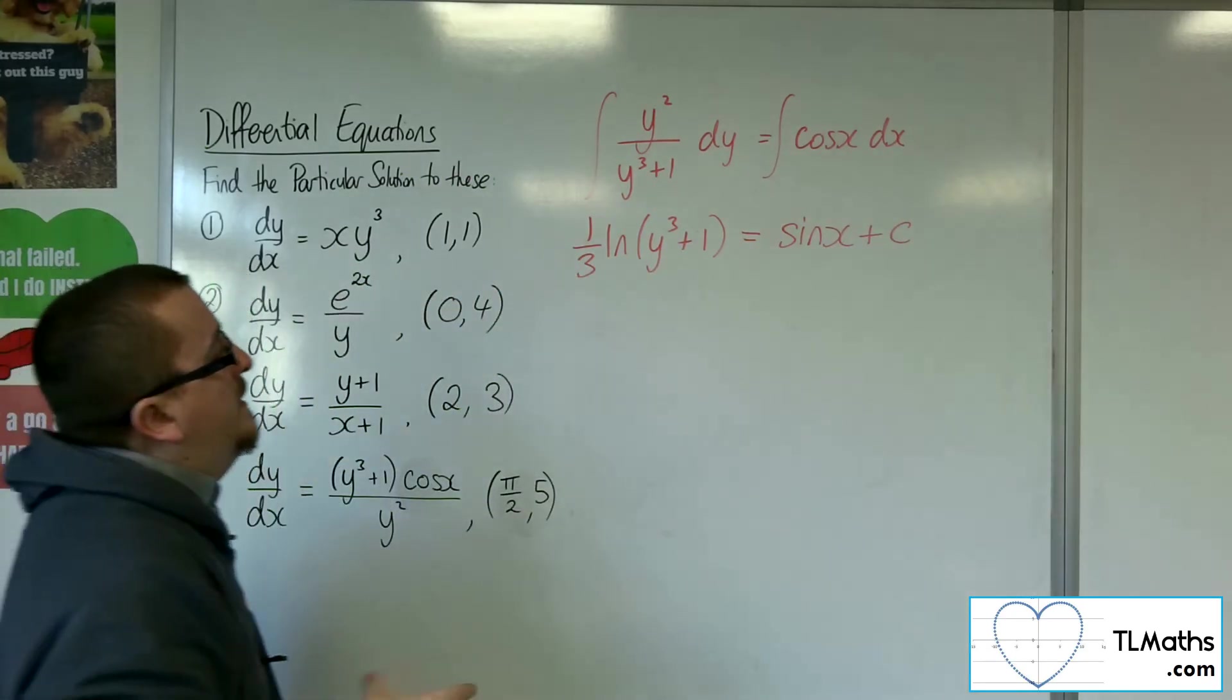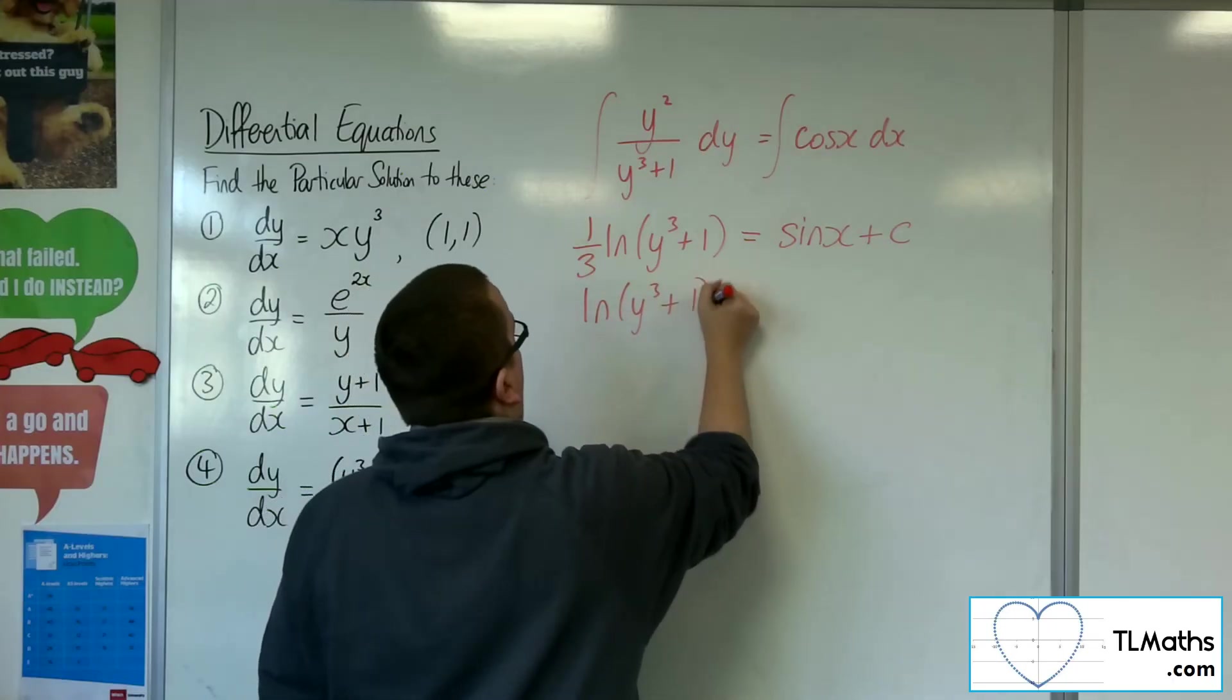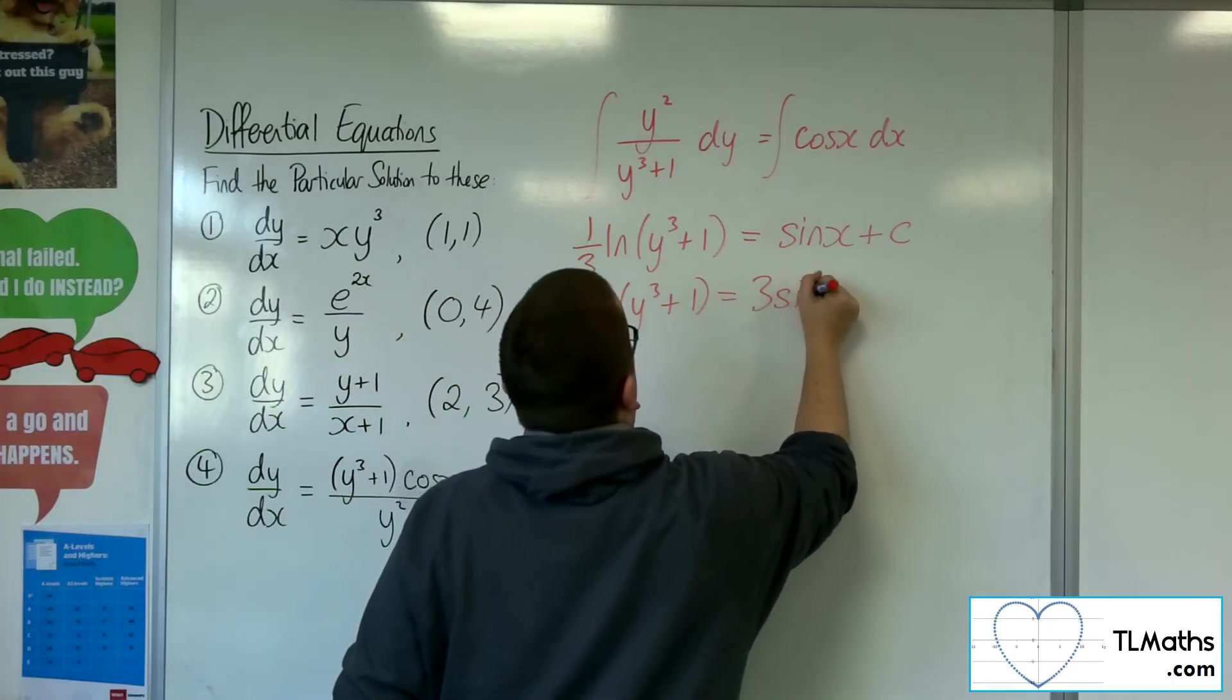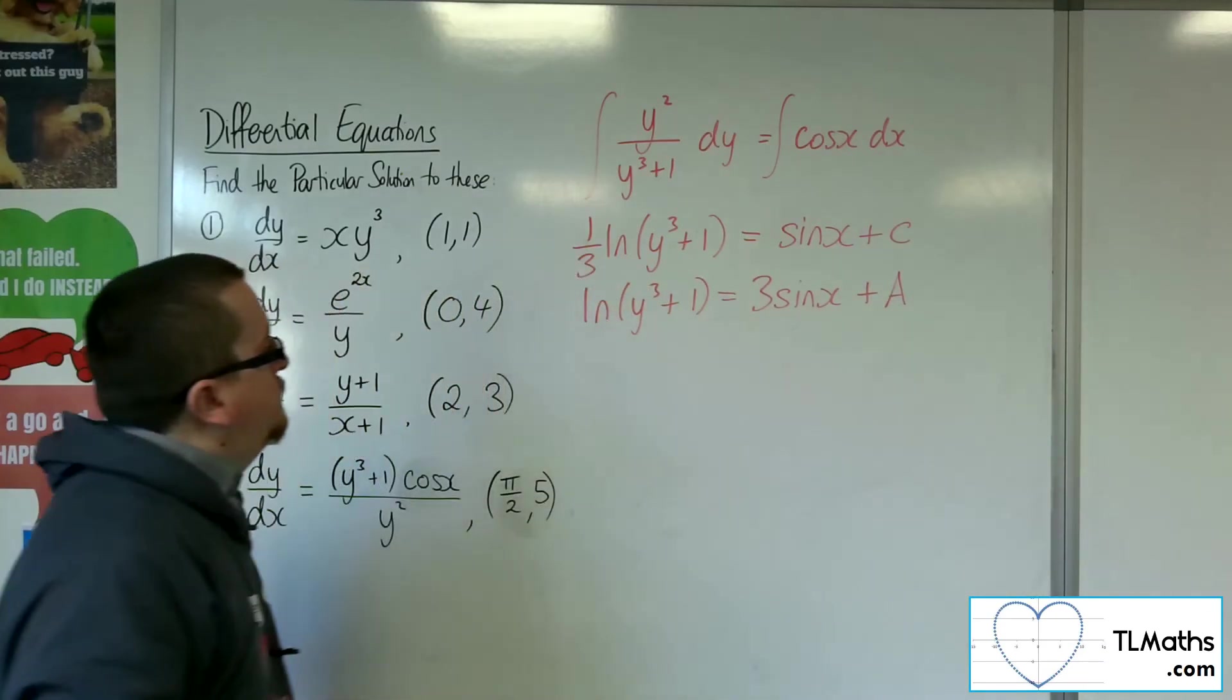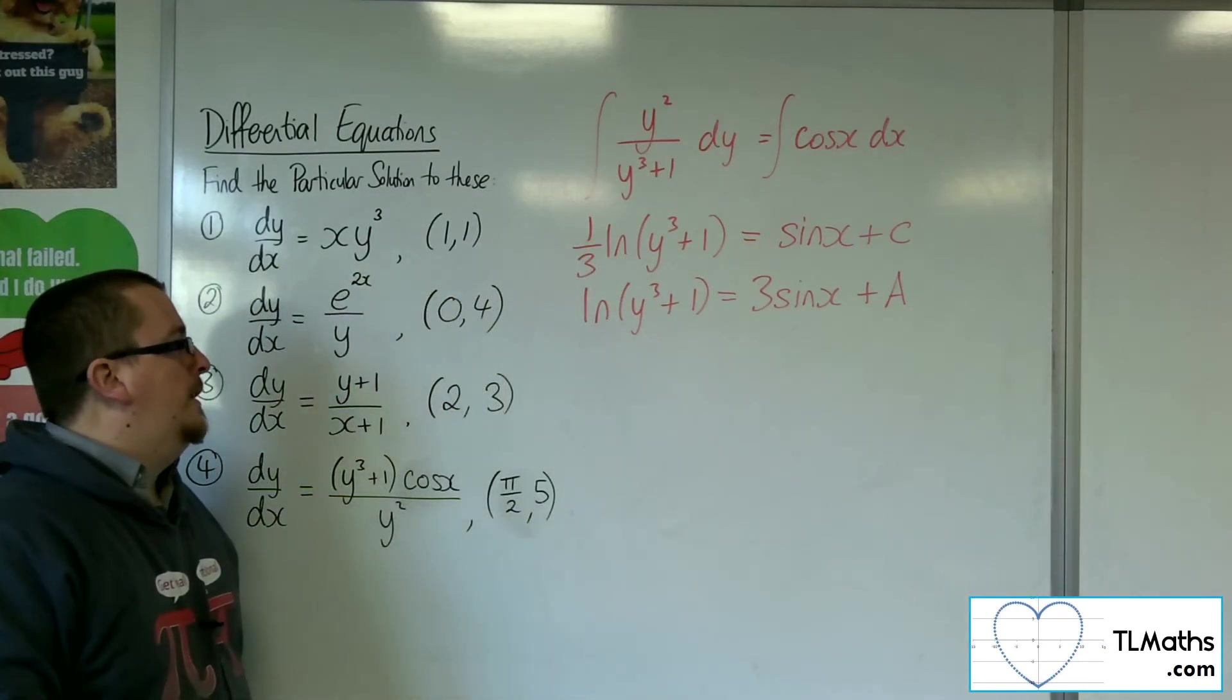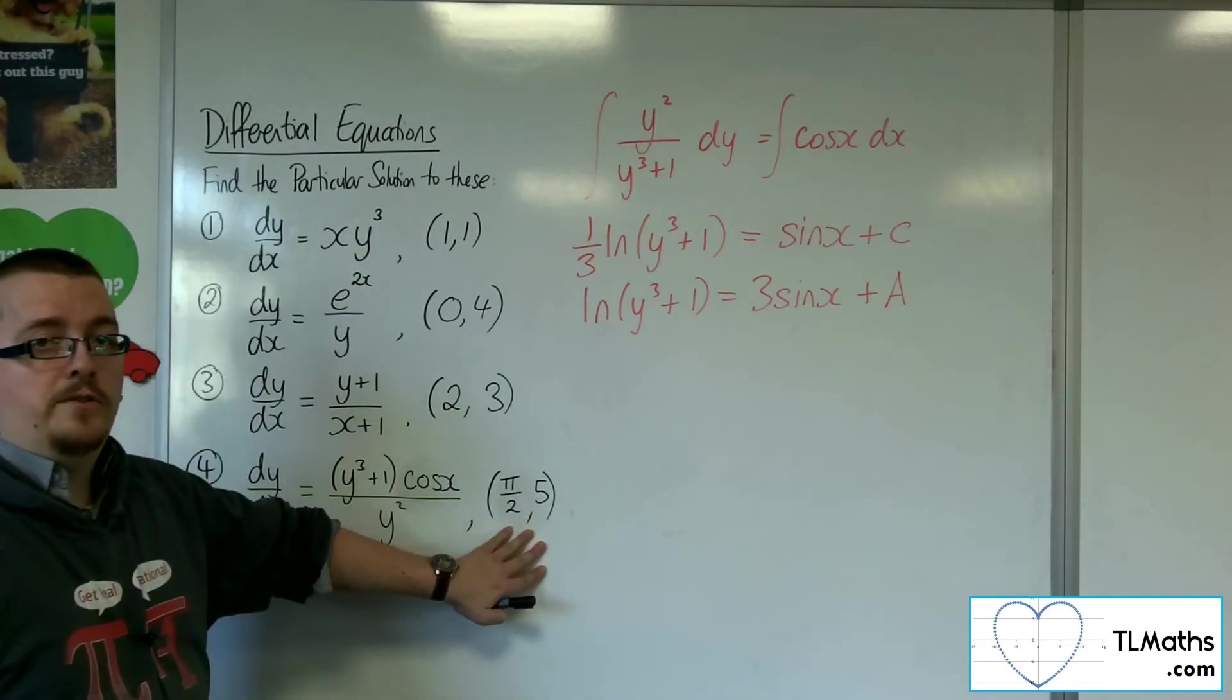Now, I could then multiply through by the 3. So it's log of y cubed plus 1 equals 3 sin x, 3 lots of c. Just call it a. Now, I'll substitute in the pi over 2, 5.